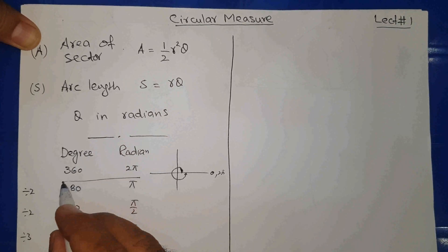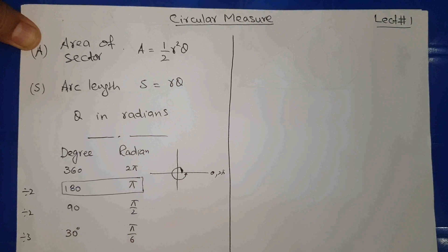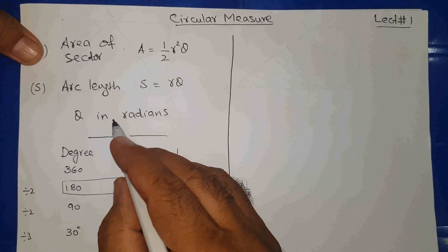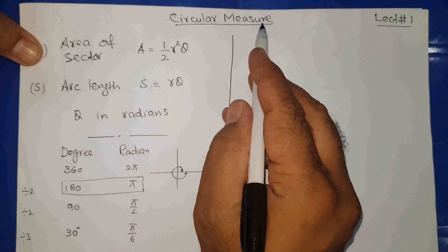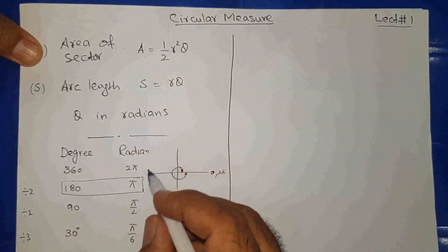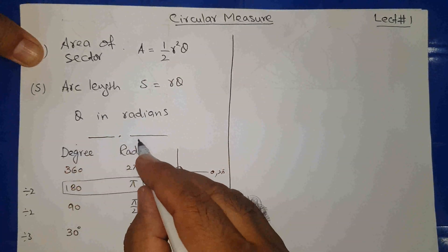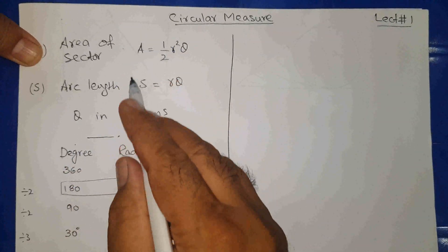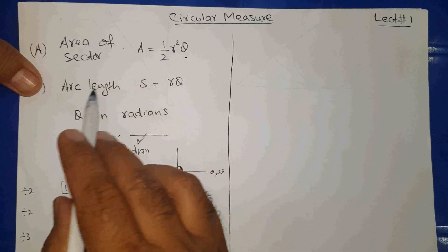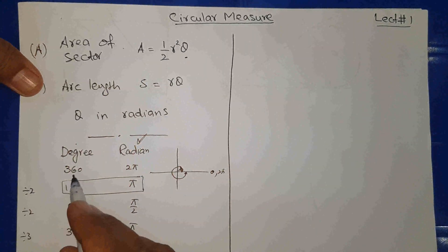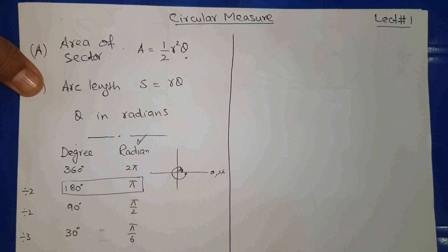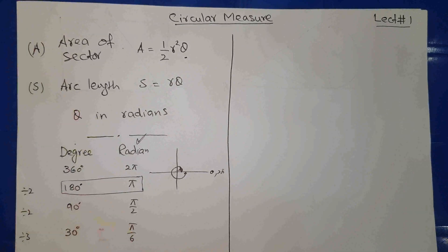We can use these links to convert degrees to radians. Why do we need this? Because in the full chapter of circular measure we will not use degrees — we'll use radians in our calculations. That is the reason we use these two formulas for area of sector and arc length. If we are given an angle in degrees, we convert it to radians and then use it in our questions.